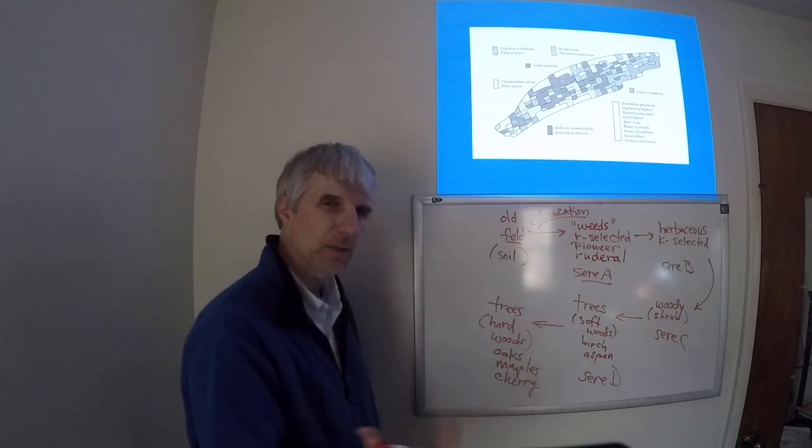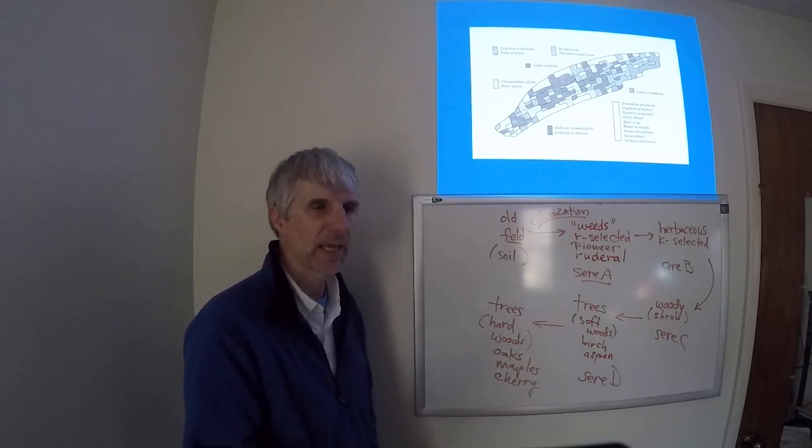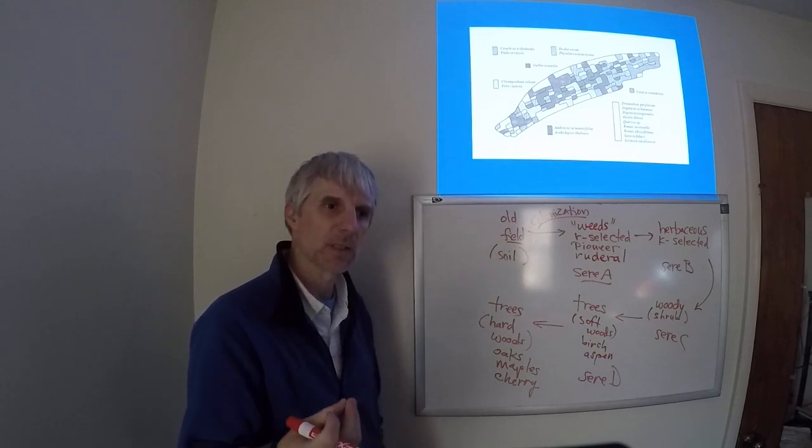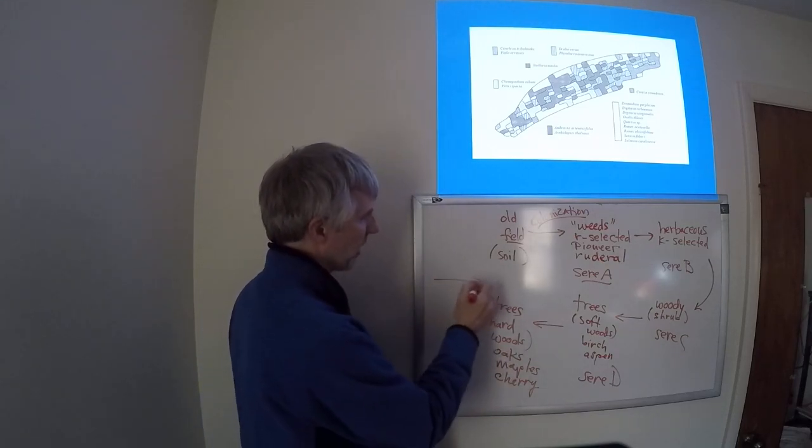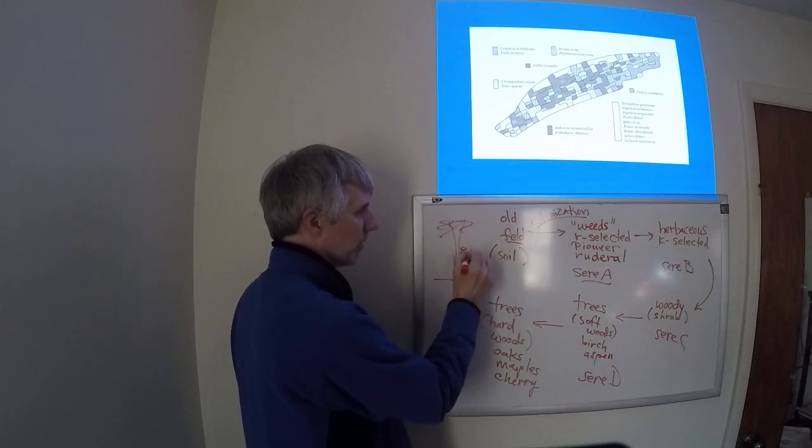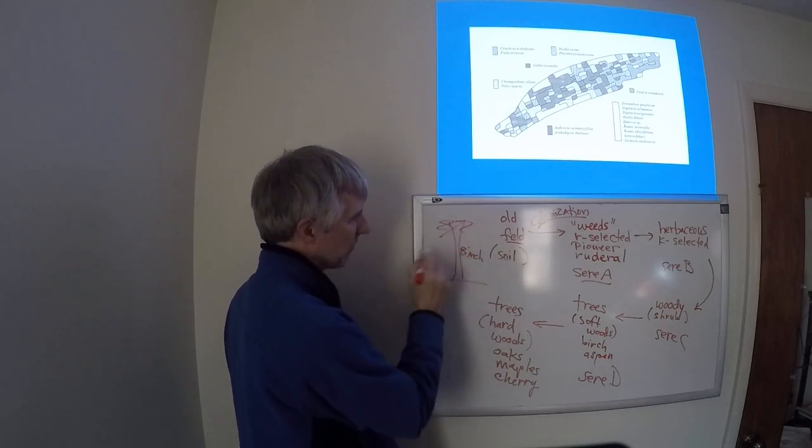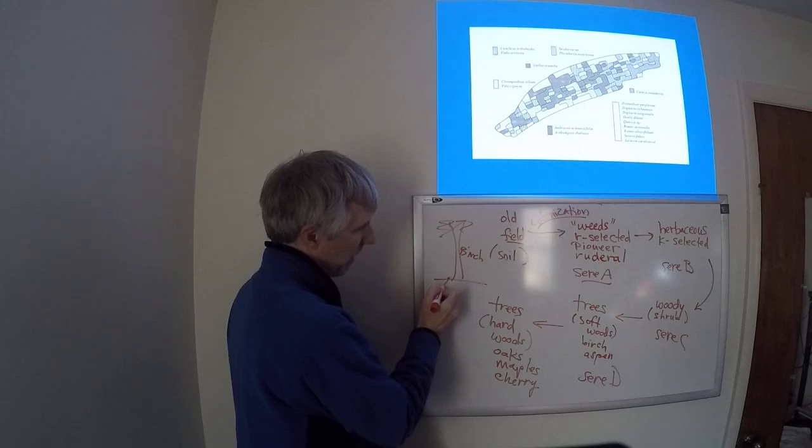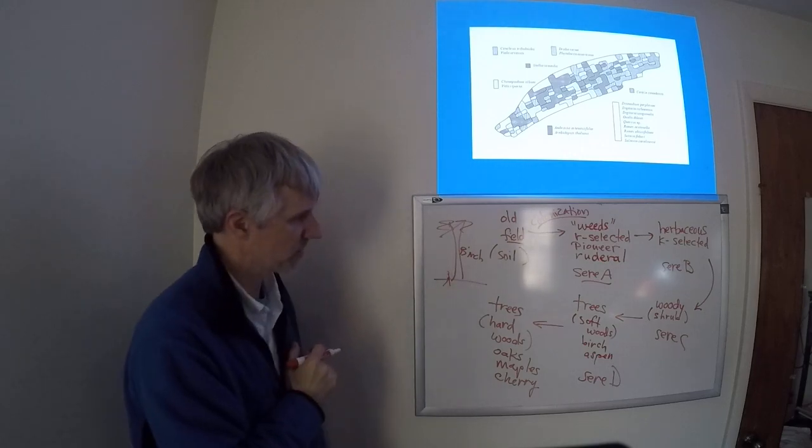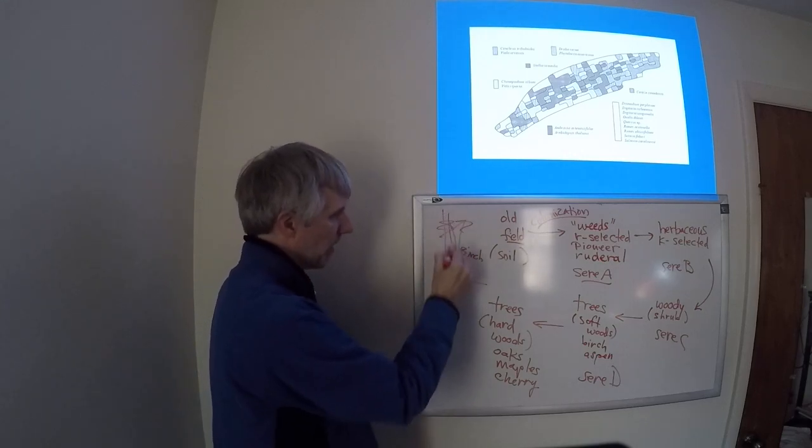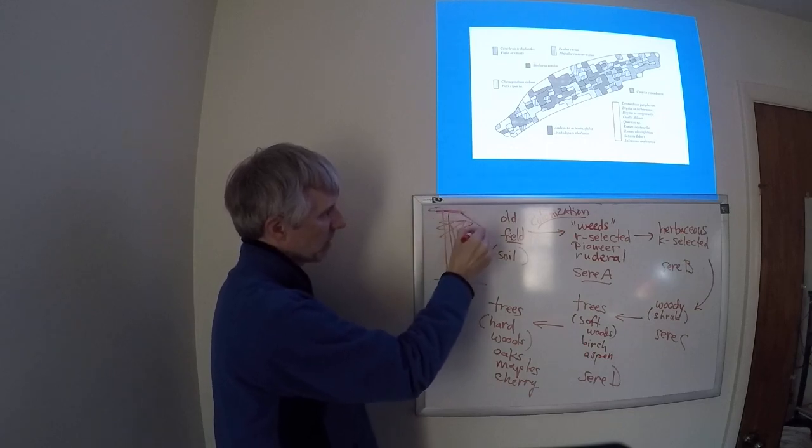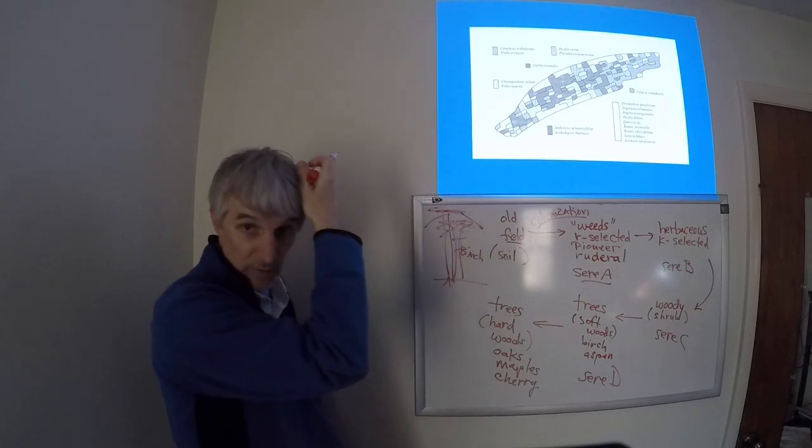These need some sort of an established canopy in order for the seedlings to develop. So if you think of maybe my birch here, providing enough shade that one of these maples can start growing, and then eventually this maple will get tall enough to shade out that birch.